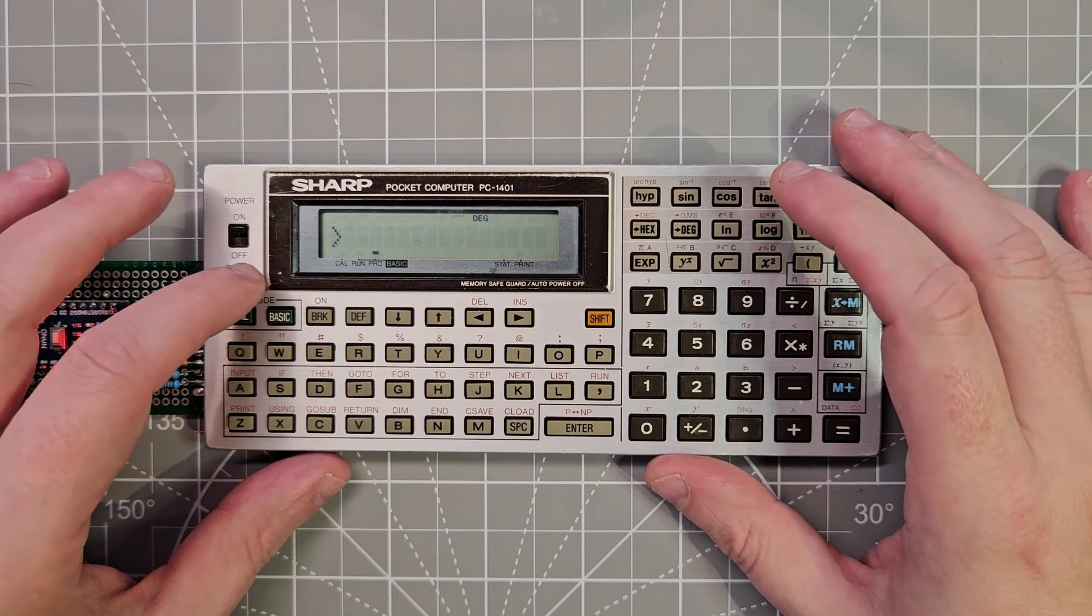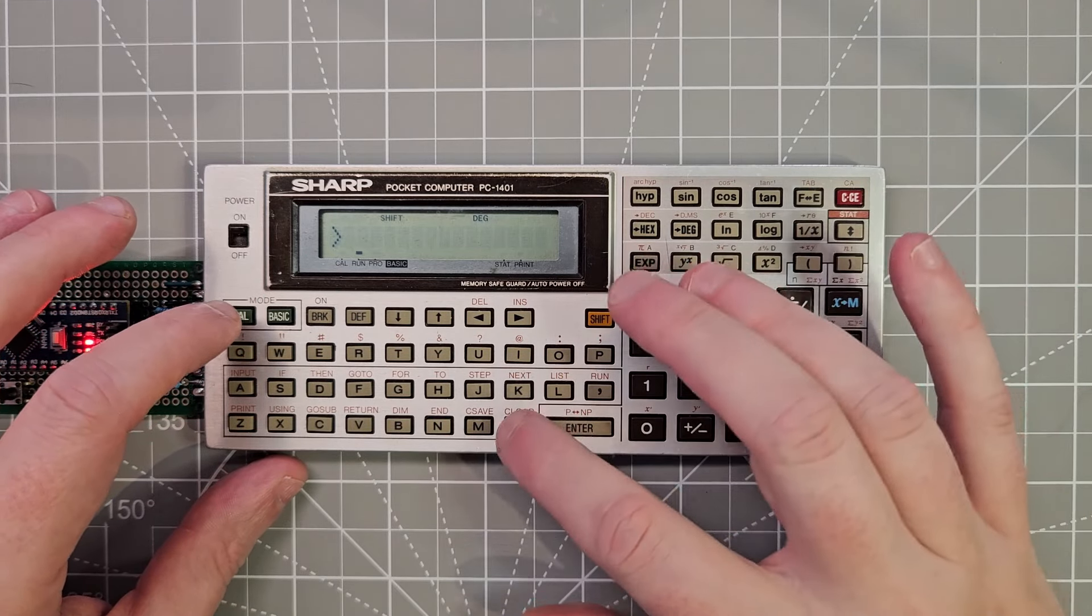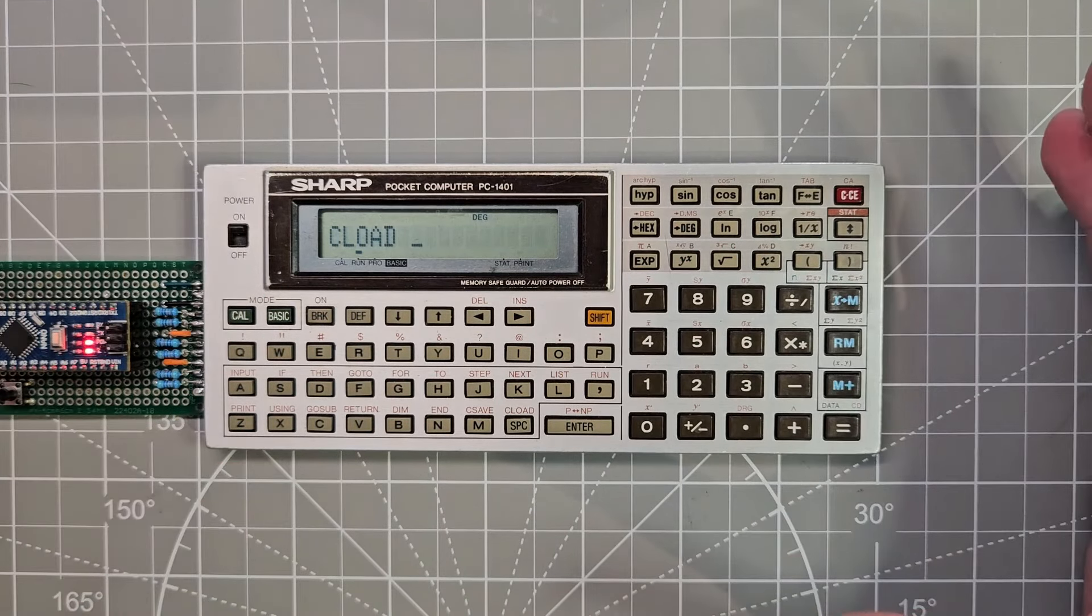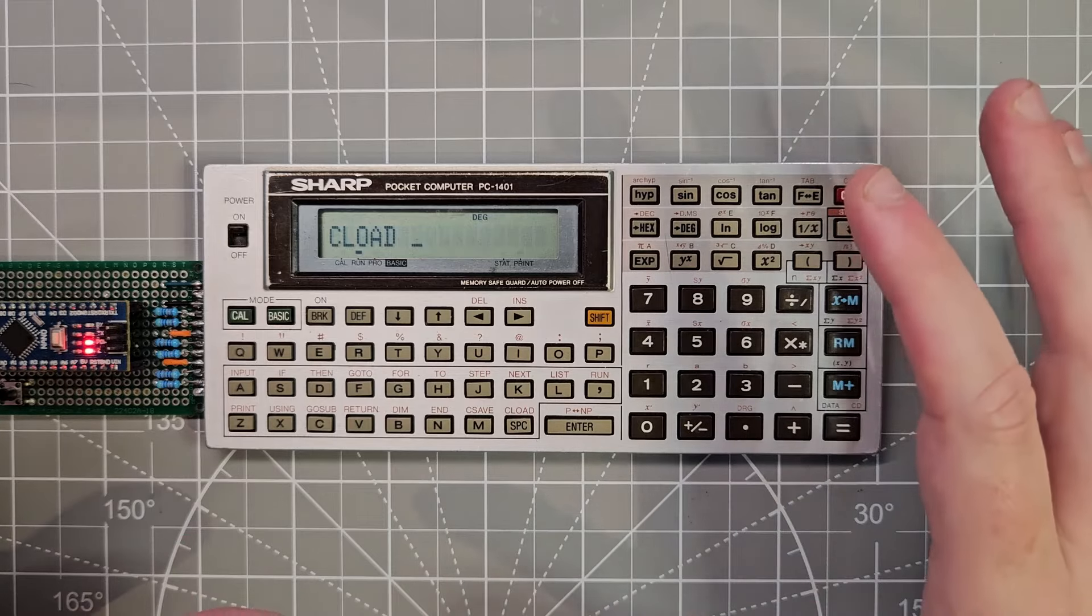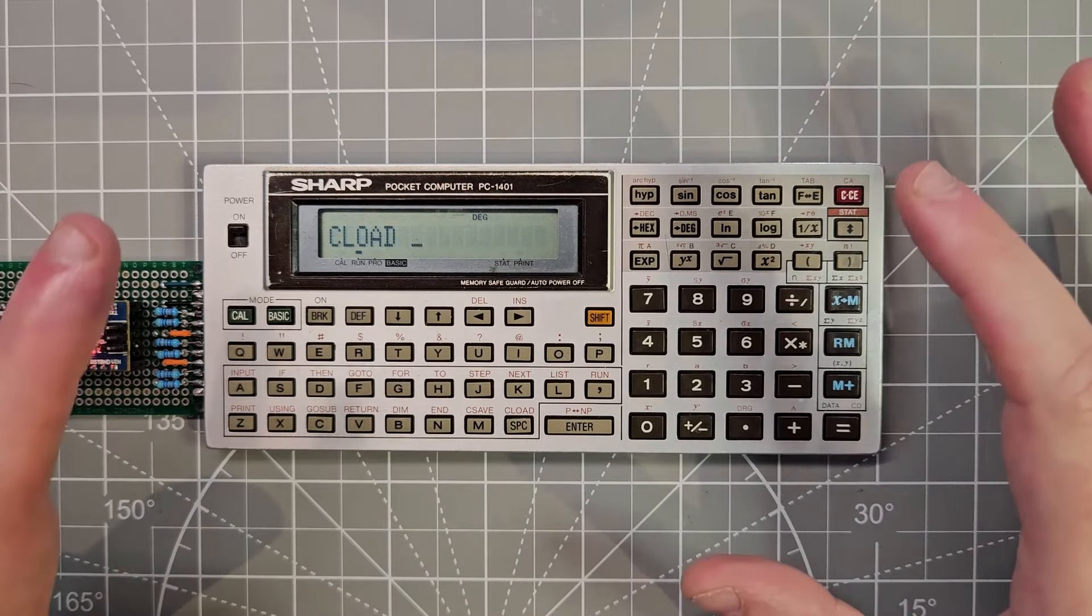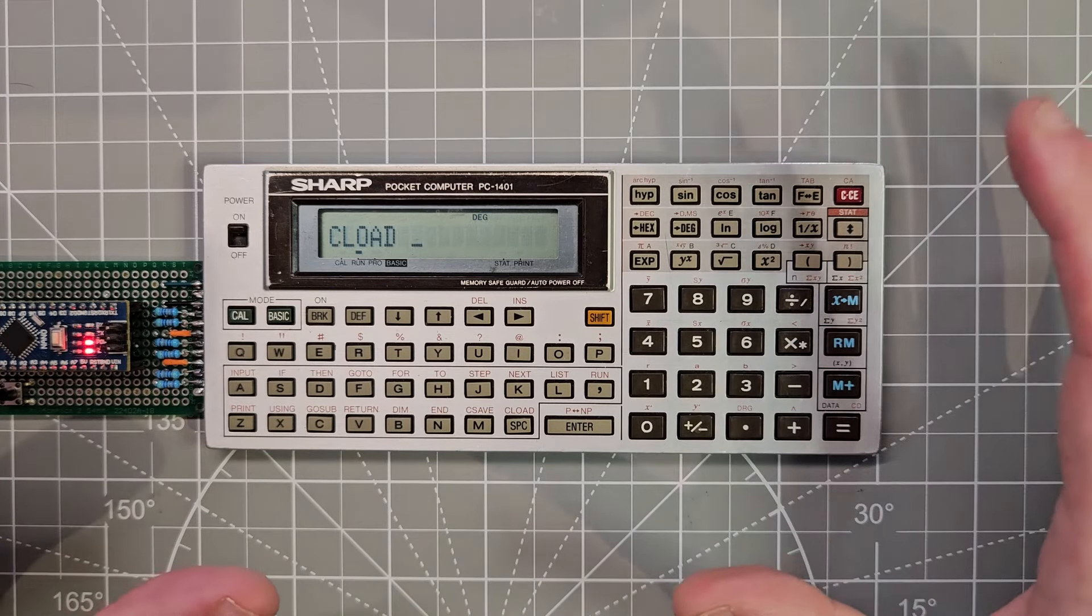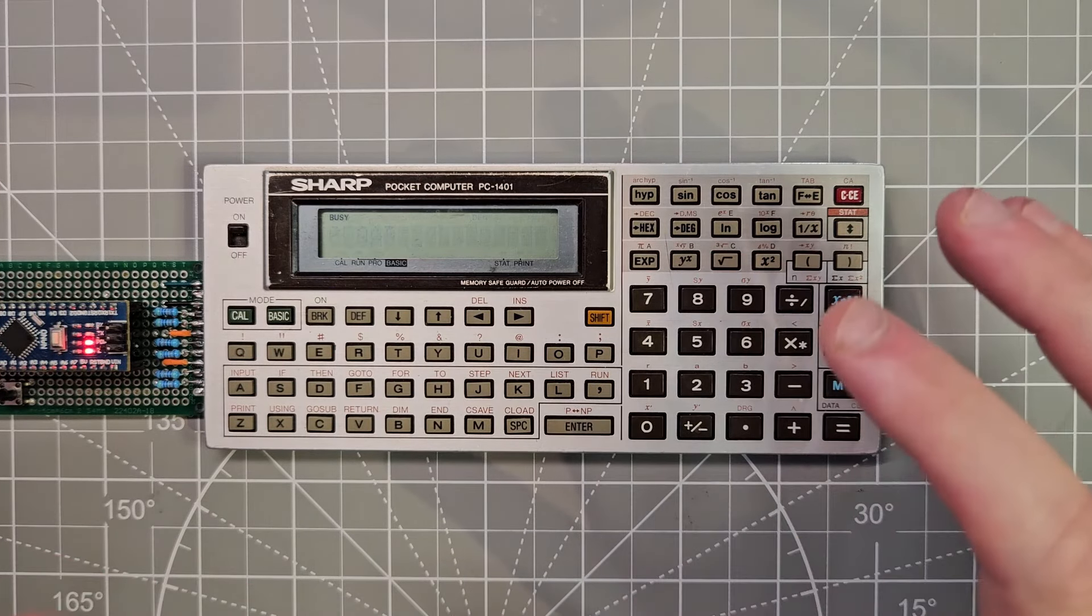So we'll go back into run mode here and we will go and do CLoad and we're going to be ready to load a cassette file. So I'm just going to demonstrate this and then I'll show how you make the cassette files and everything. But it's pretty fun just to hear it and watch it go.